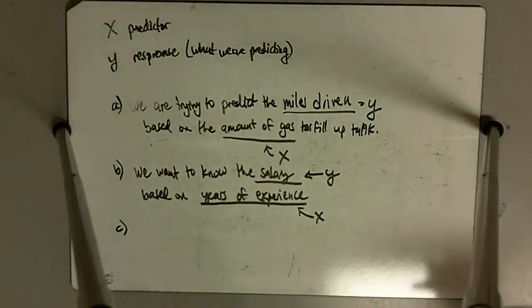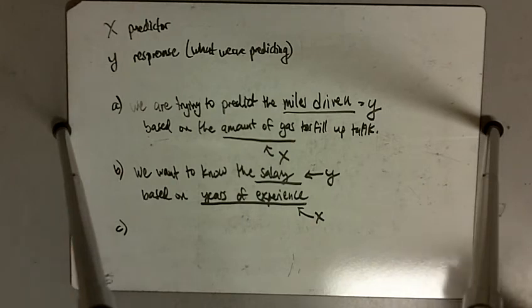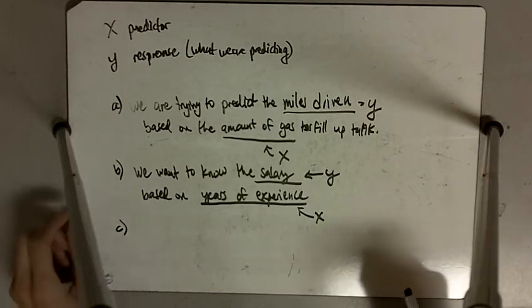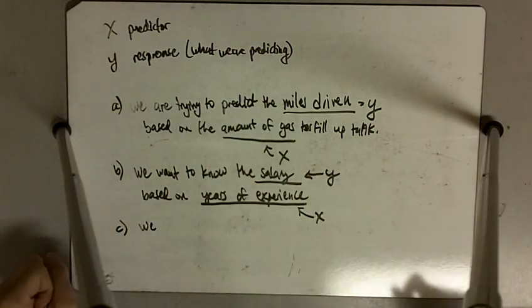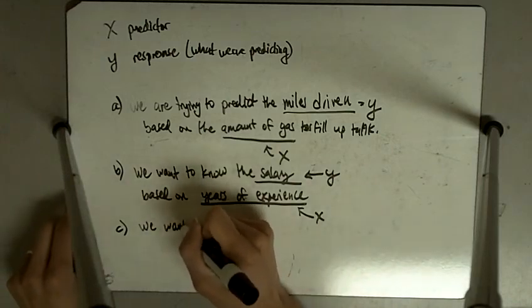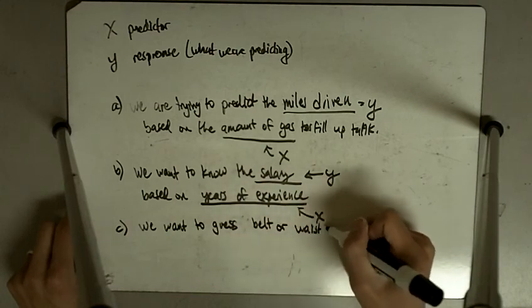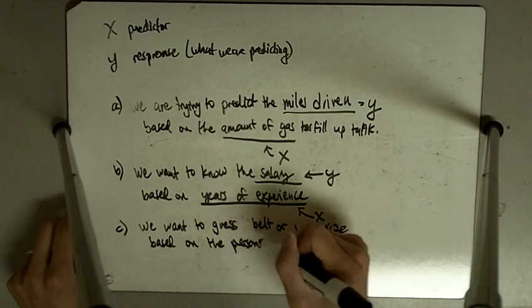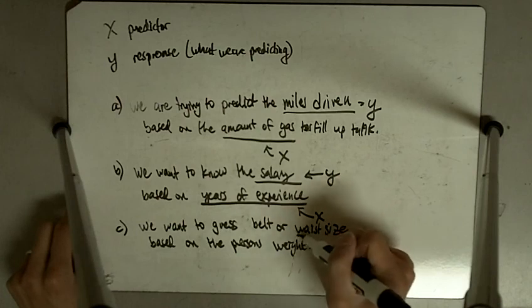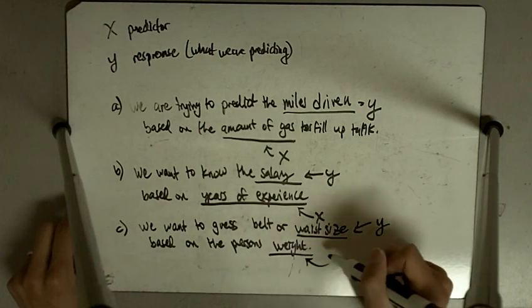And the last thing is we wish to buy a belt for a friend and know only his weight. You have data on weight and waist sizes. So what we're trying to do is make a guess for the belt size, or waist size, based on the man's weight. So we're trying to predict waist size. This is our response. The waist size is the response based on the person's weight. So the weight is our predictor, our x variable.